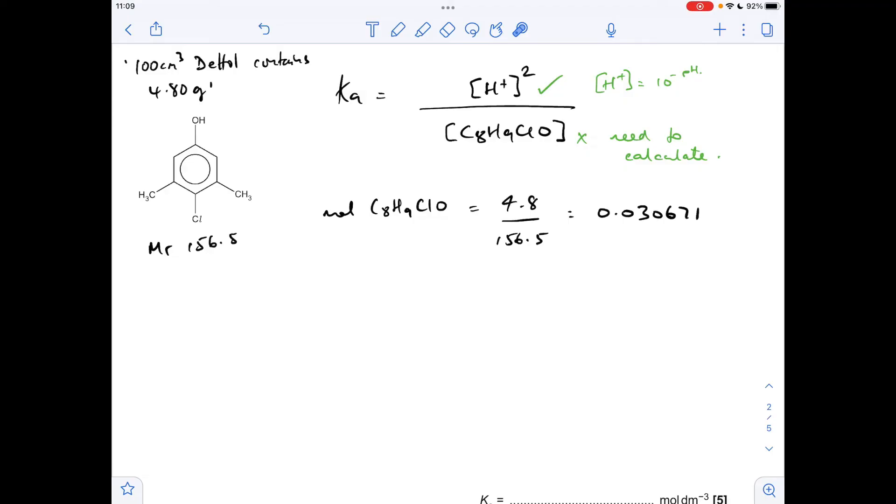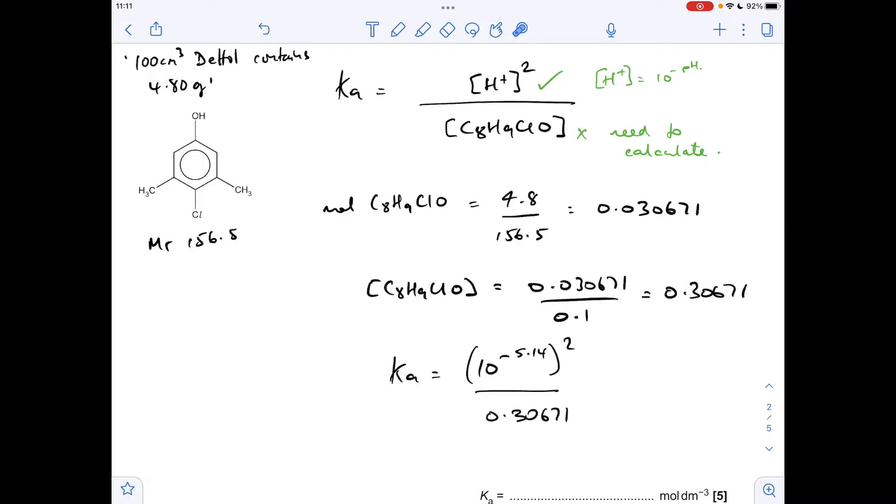So to get that concentration, we're using the fact that we're told that 100 cm cubed of Dettol contains 4.80 grams. So the moles would be mass over MR. So we've got that many moles in that 100 cm cubed. So in terms of concentration, it's the moles divided by the volume. 100 cm cubed in decimeters cubed is 0.1. So all we need to do now is feed the numbers into the simplified Ka expression. So 10 to the minus 5.14 squared all over that concentration gives a Ka of 1.71 times 10 to the minus 10 moles per decimeters cubed.